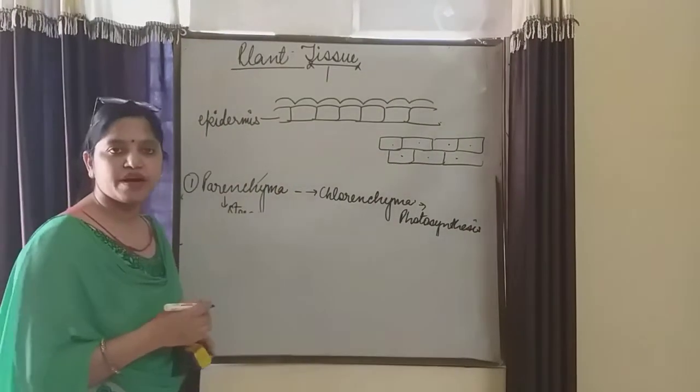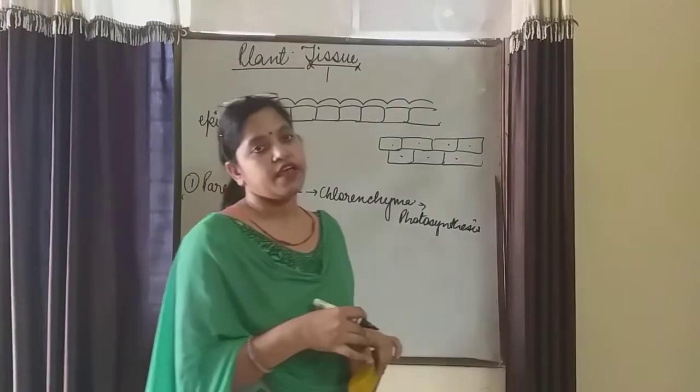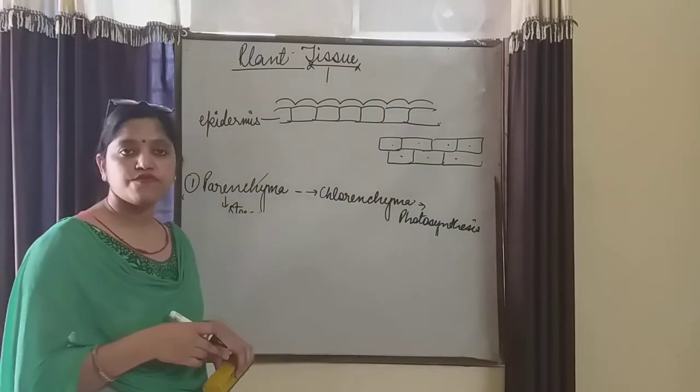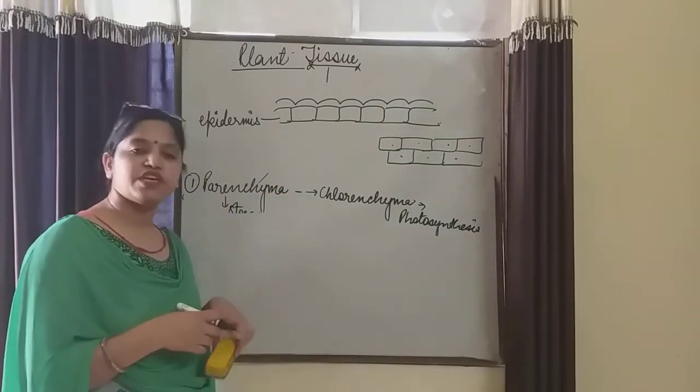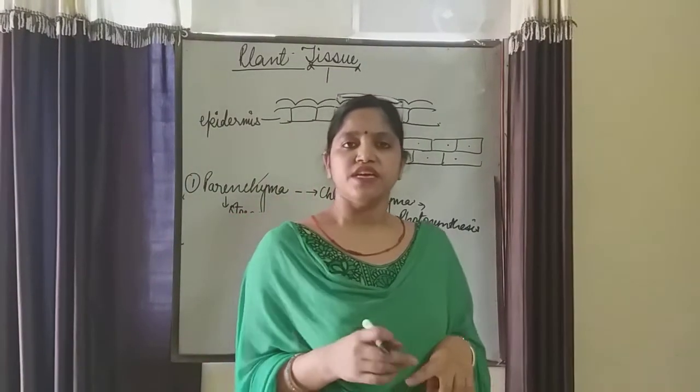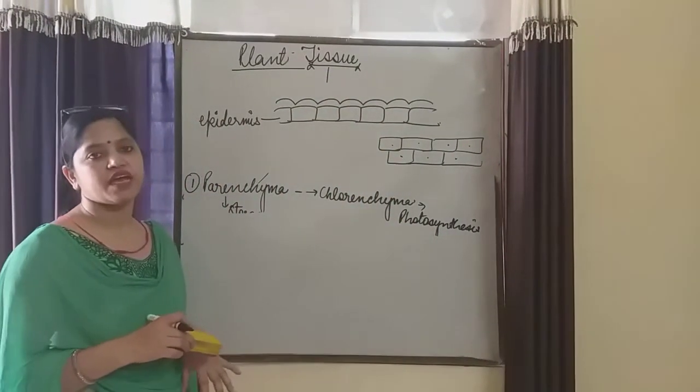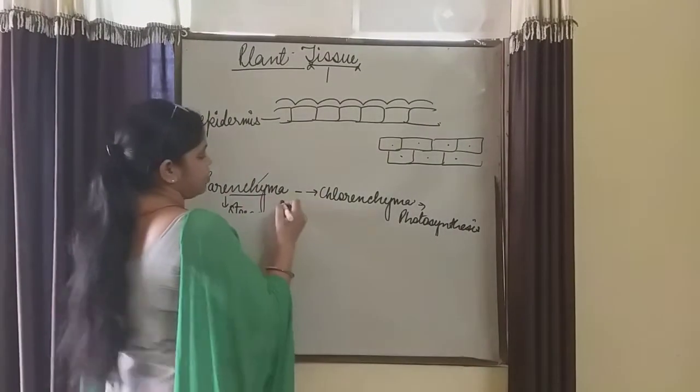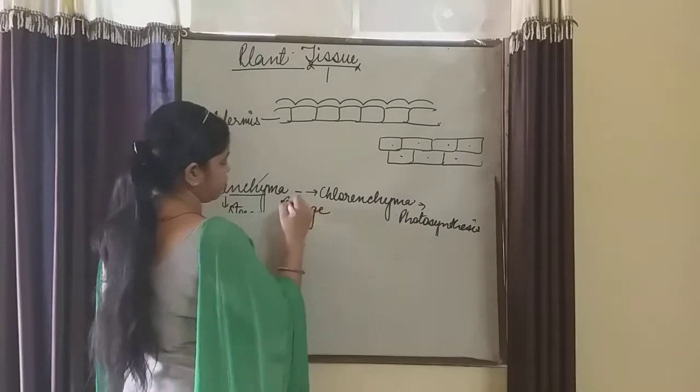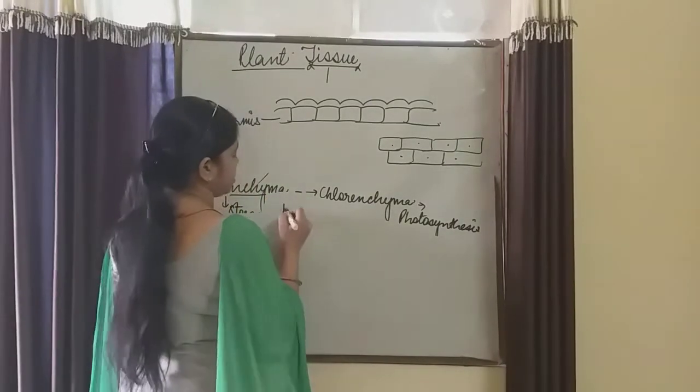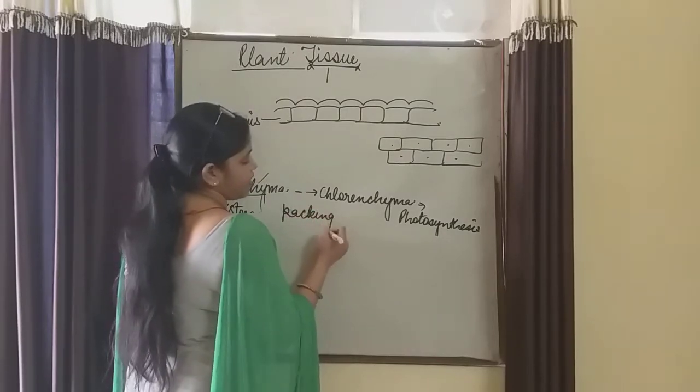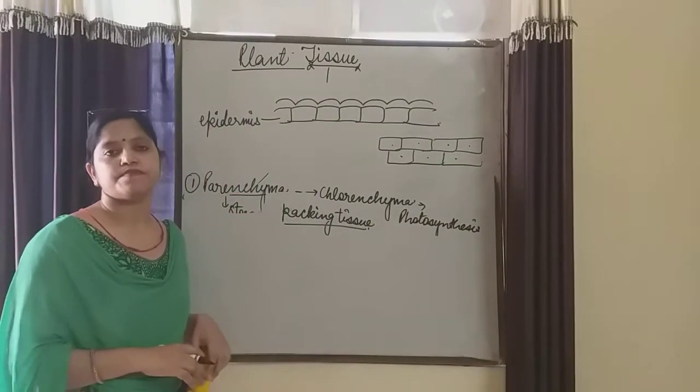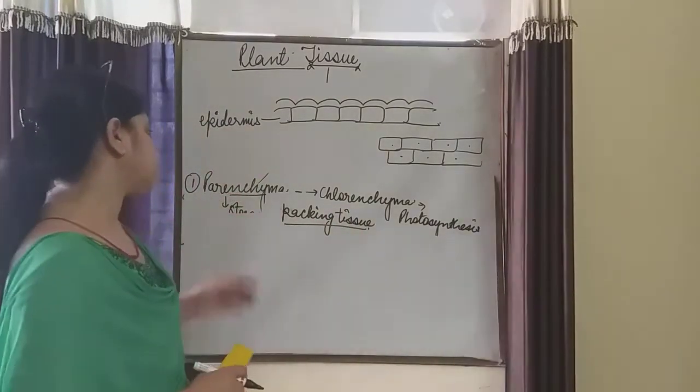So this is our parenchyma function. They help float, formation of food through photosynthesis. They will also do the storage and formation of food. If we talk about tissue, there is empty space. What is the work of parenchyma? Therefore it is known as the packing tissue. This is all about the parenchyma.